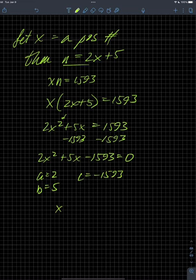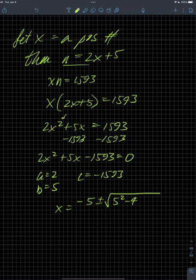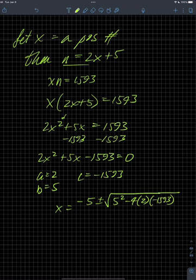So x equals negative b plus or minus the square root of b squared minus 4 times a times c, all over 2 times a, which is 2. That term under the square root is going to be positive, so it's just going to be a large value.